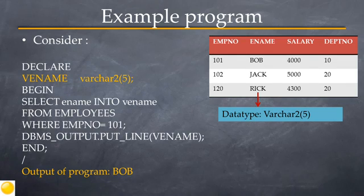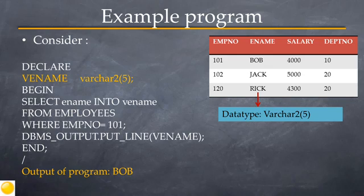To understand a %TYPE variable, let's take a look at the example program. First consider the employees table that has four columns: EMPNO, ENAME, SALARY, and Department Number. The ENAME column has been defined with a data type of VARCHAR2 and a size of 5 bytes.